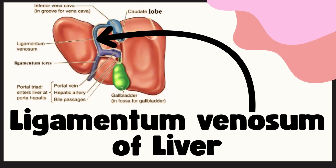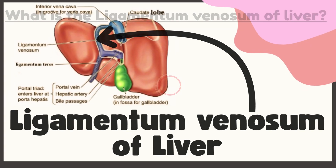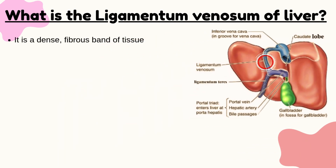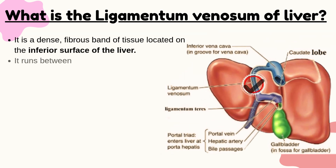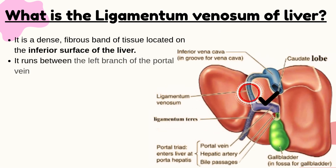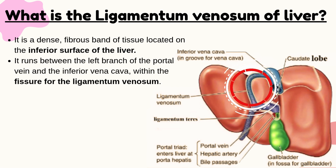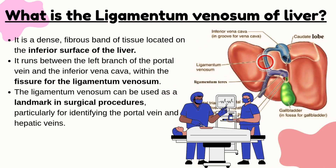The Ligamentum Venosum of the liver is a dense, fibrous band of tissue located on the inferior surface of the liver. It runs between the left branch of the portal vein and the inferior vena cava within the fissure for the Ligamentum Venosum. It can be used as a landmark in surgical procedures, particularly for identifying the portal vein and hepatic veins.